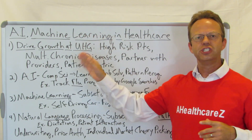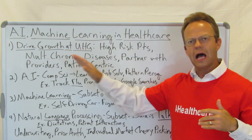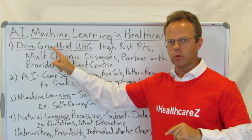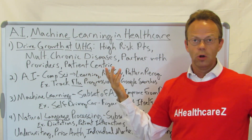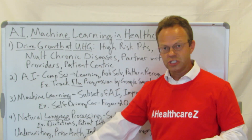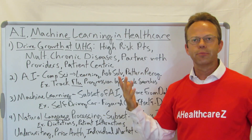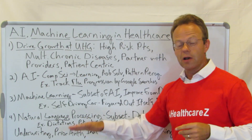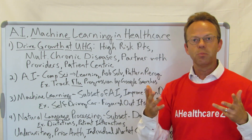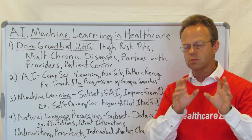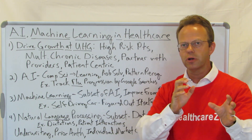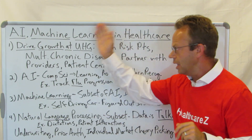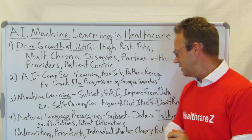So ways that UnitedHealth Group could actually use AI and machine learning — notice that their goal is to drive growth, to drive revenue and profits. One, you could use AI and machine learning for underwriting — you could significantly improve the ability to underwrite a group using this technology. Next up, prior authorization. You could make prior authorization much more effective to figure out which things need to be prior authorized and which ones don't, and really clamp down on utilization by applying AI and machine learning to prior authorization.